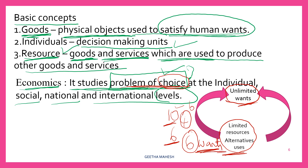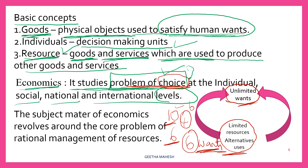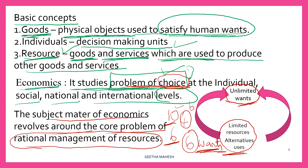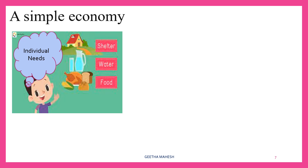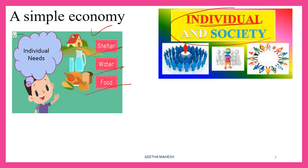You can conclude that the subject matter of economics revolves around the core problem of rational management of resources. You have to manage limited resources in such a way that you satisfy your maximum number of wants. Now let us understand a simple economy. Think of any society — people in the society need many goods and services. Like an individual, the whole society needs so many goods and services.